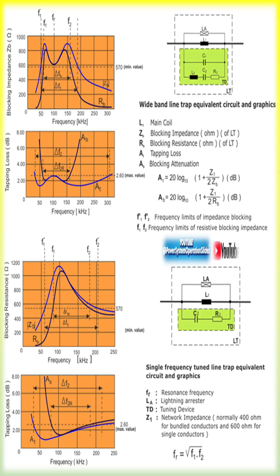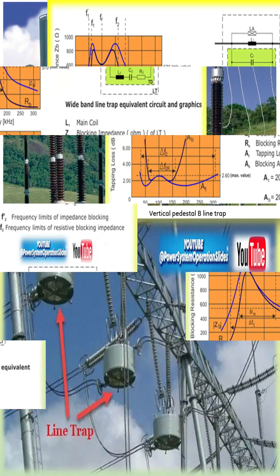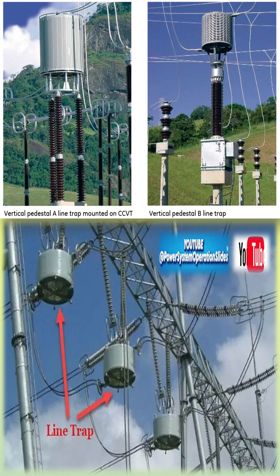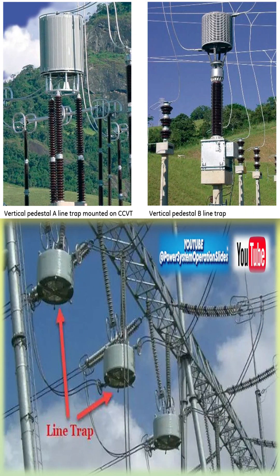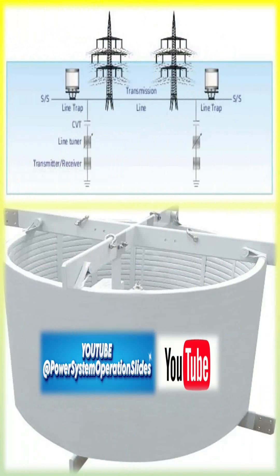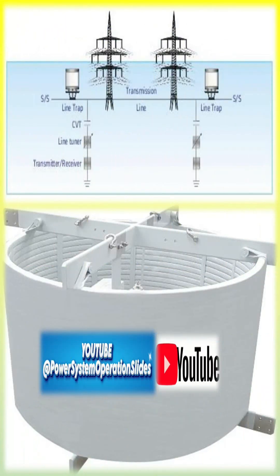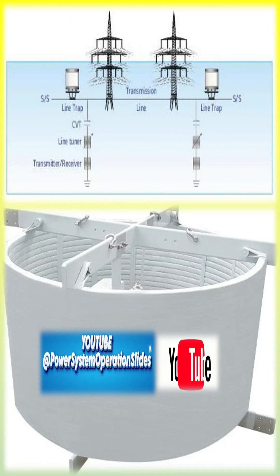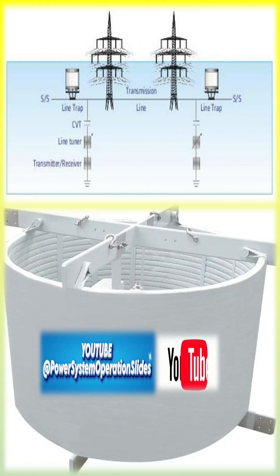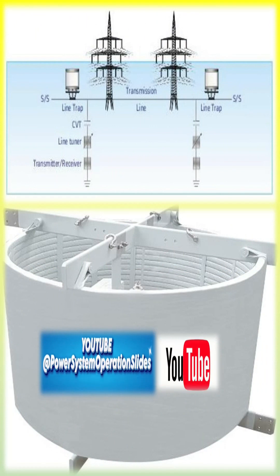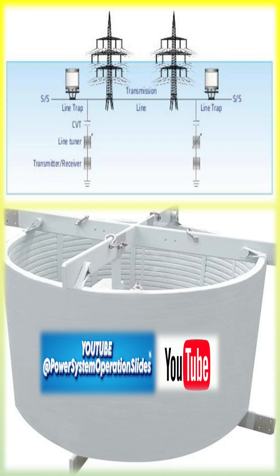Capacitive reactance XC: frequency F is inversely proportional to XC. As frequency increases, capacitive reactance and opposition decrease. Capacitive reactance is used to block high frequencies. To achieve this, we add a large inductive reactance to the transmission line using a main coil, which carries any rated current according to the substation.